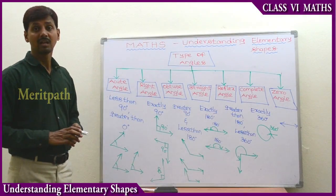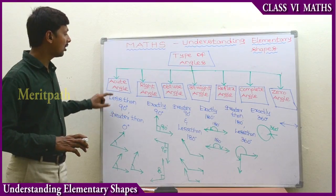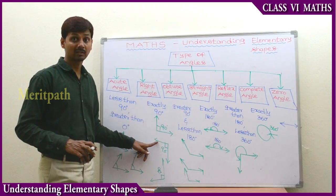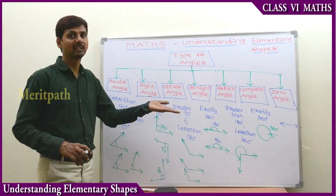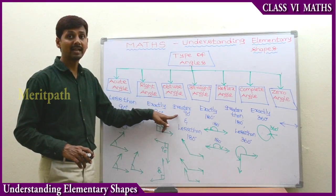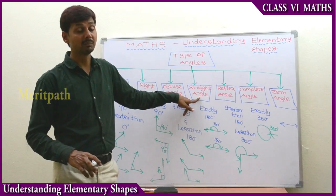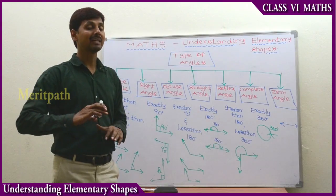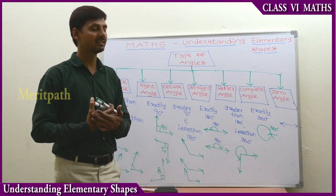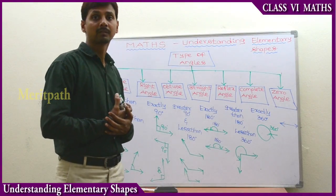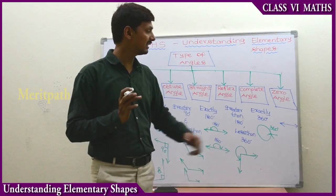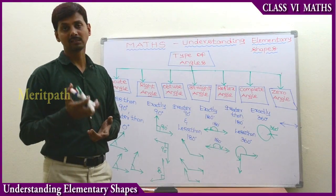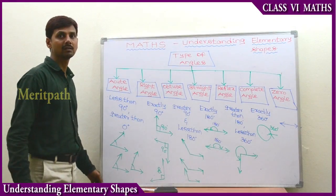To recap: the angle less than 90 degrees and greater than zero degrees is an acute angle. The angle measuring exactly 90 degrees is a right angle. The angle greater than 90 and less than 180 degrees is an obtuse angle. The angle measuring exactly 180 degrees is a straight angle. The reflex angle measures greater than 180 and less than 360 degrees. The complete angle measures exactly 360 degrees. If the angle is not formed, we call it a zero angle. These are the types of angles we have discussed.